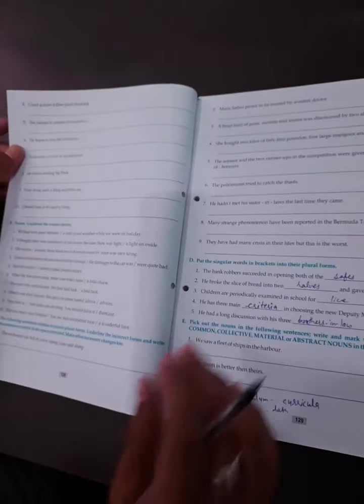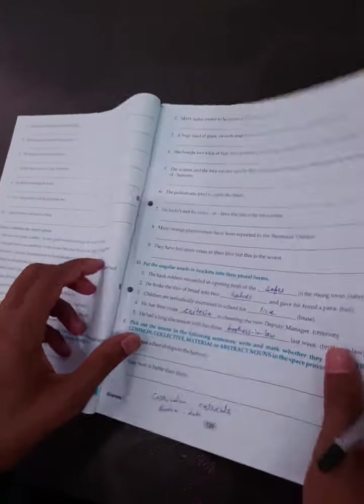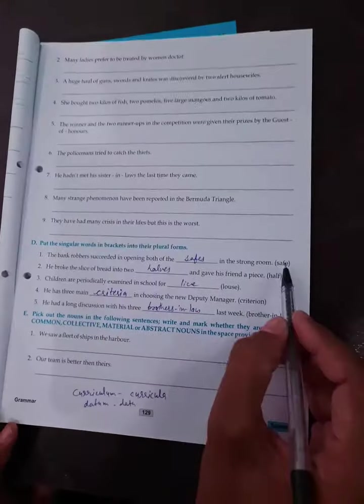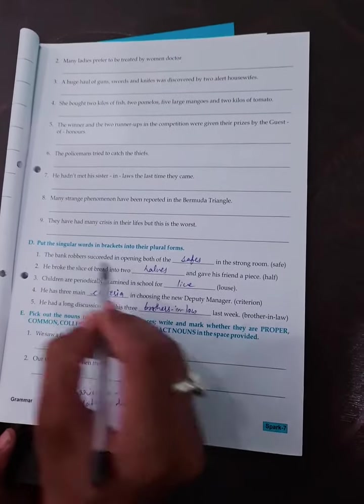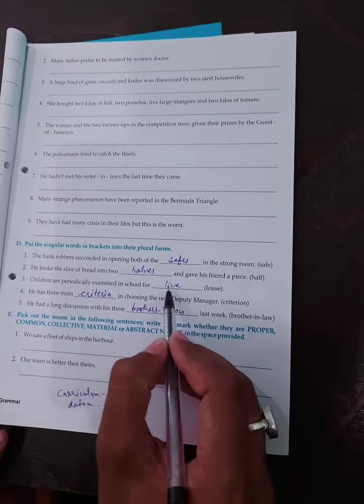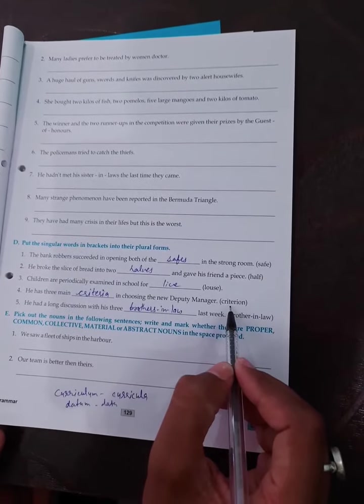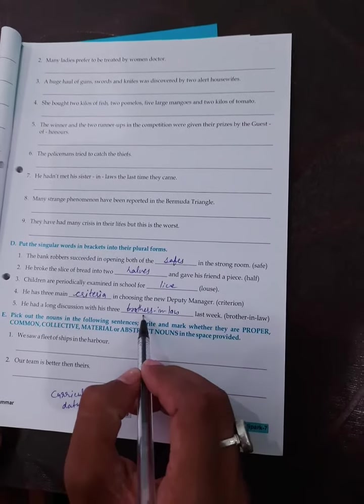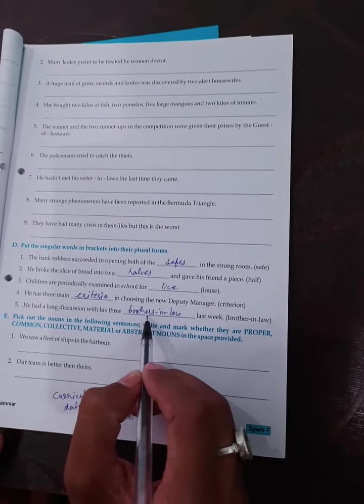Next exercise - put the singular words in brackets into the appropriate plural form. Half becomes halves, roof becomes roofs, criterion becomes criteria, brother-in-law becomes brothers-in-law, compound noun. Got it?